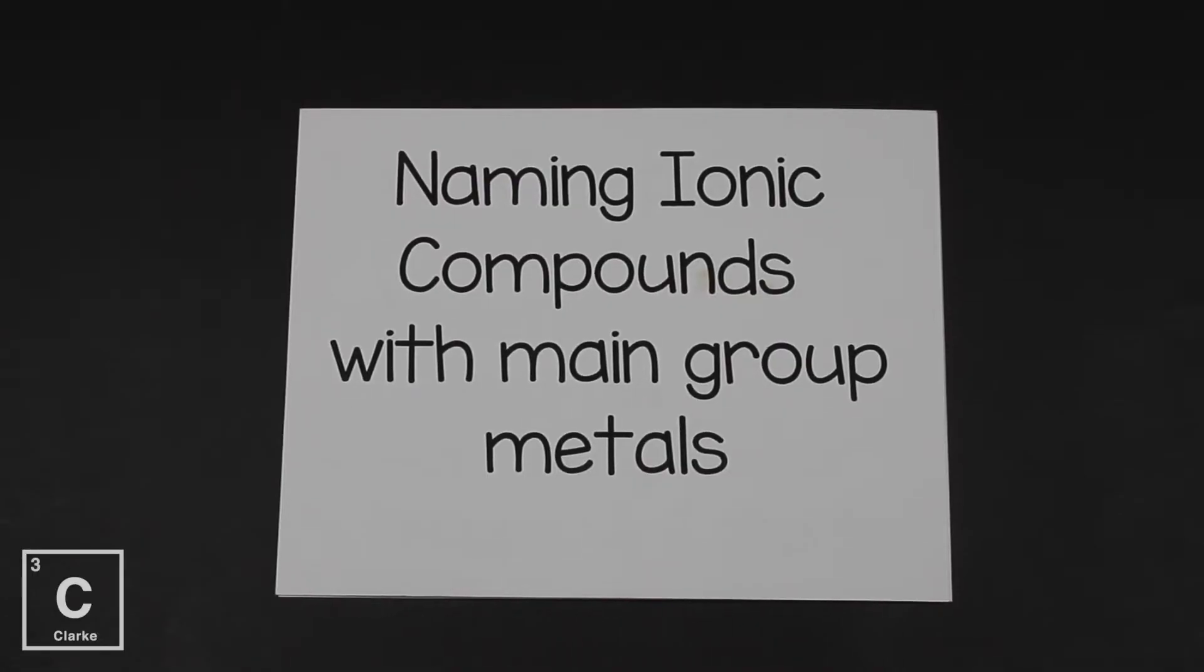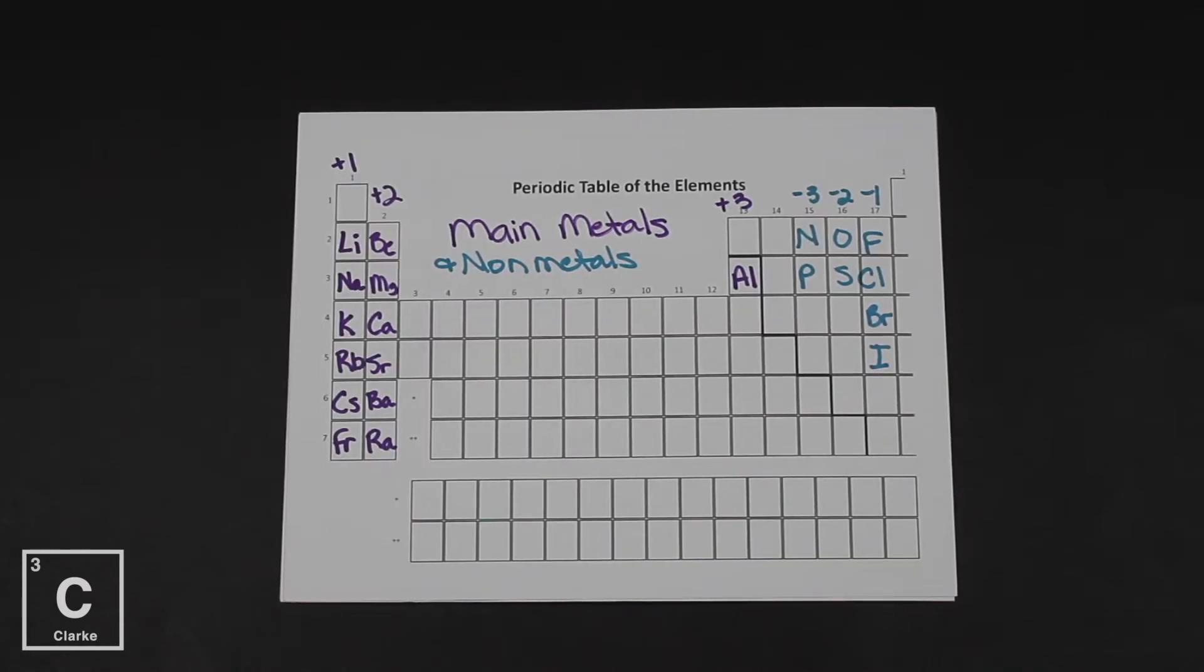Okay, so let's focus on naming ionic compounds with main group metals. So remember, the main groups are those tall groups. They're the groups that always follow the trends of the periodic table. The main groups always tell us the valence electrons and the main groups always tell us the oxidation numbers. So when we're talking about main group metals, we're talking about group one, group two, and aluminum.